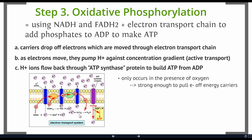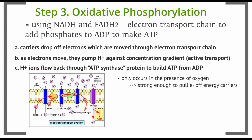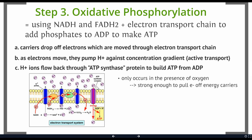If there is no oxygen present, these taxi cabs won't open their doors — they won't release any of their electrons. If they don't release their electrons, there's no energy to pump hydrogen ions. If there's no energy to pump hydrogen ions, there won't be enough hydrogen ions to flow back through ATP synthase, and you won't make ATP. This may sound dramatic, but the reason you die if you stop breathing is you shut down this system: no oxygen, no electron pump, no hydrogen pump, no ATP being made.